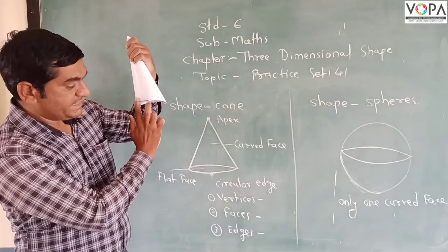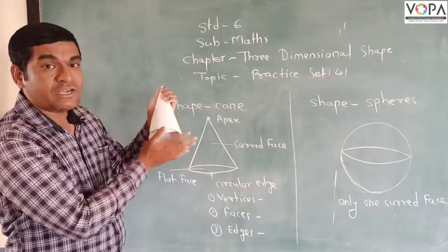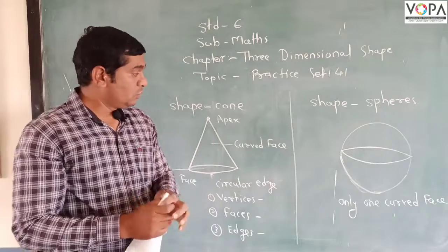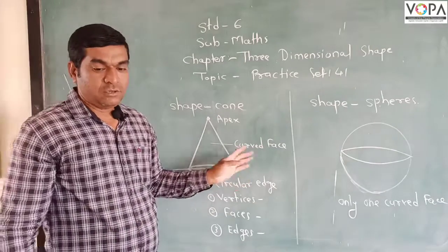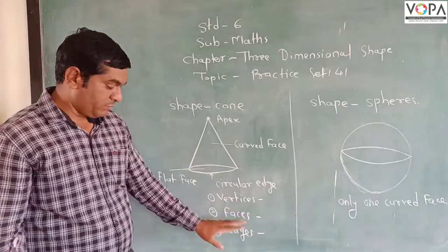So it is one edge there. It is called as an edge. And flat face, so the downside is called as a flat face. So from the above information, we will be answering the number of faces, number of edges, and number of vertices.